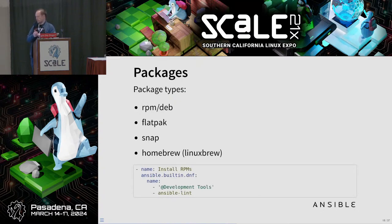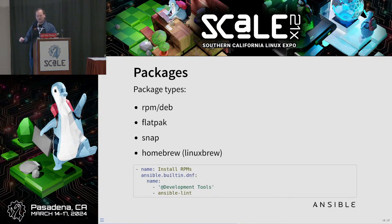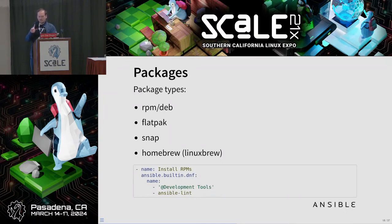I mentioned packages, and there are many different package managers. My suggestion is that for each package manager you use, maintain a list of what you want to install. Examples include distro packages — RPMs for Red Hat family, Debs for Debian family — Flatpaks, which I use for a number of GUI applications, Snaps, and finally I've recently become a big fan of Homebrew specifically Linux Brew, because there's a lot of stuff packaged there that hasn't yet been packaged into a distro's repos.